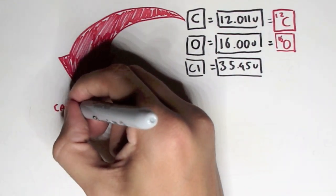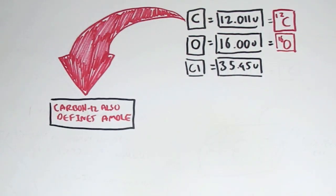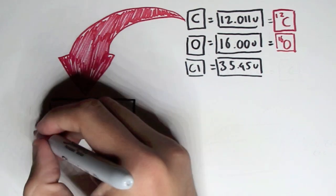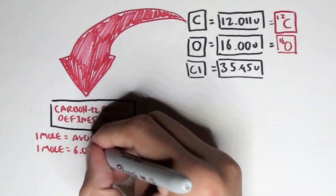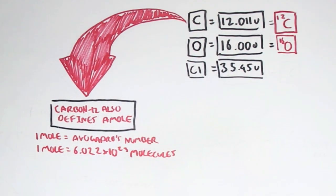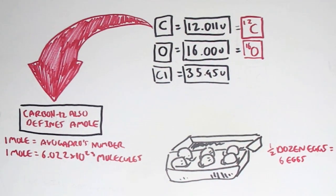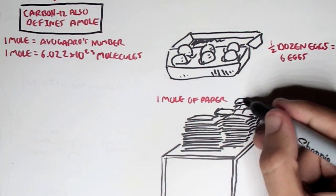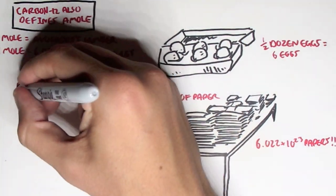Now, carbon 12 also defines a mole. Now, a mole is a very complex subject, I know. But essentially, we can say that 1 mole equals Avogadro's number, which is just a number. So, 1 mole equals Avogadro's number, which is 6.022 times 10 to the 23 of anything, in this case, molecules. A mole defines a number. It's basically the same as saying half a dozen eggs equals 6 eggs. A mole of paper equals 6.022 times 10 to the 23 papers.